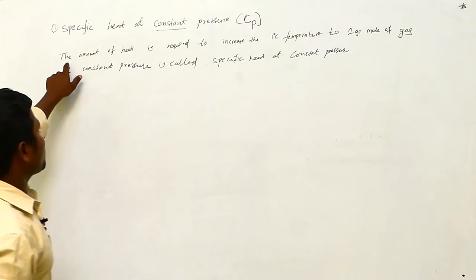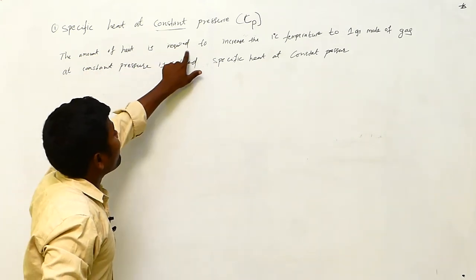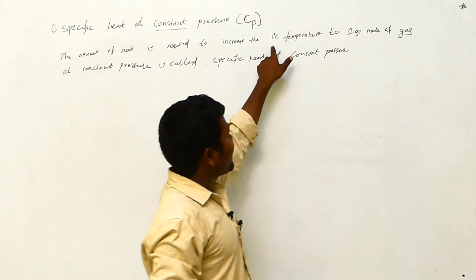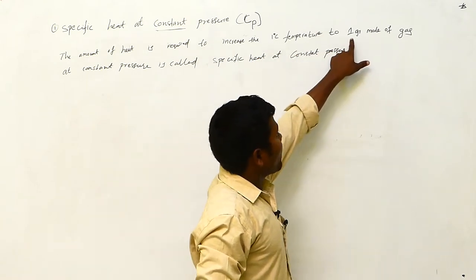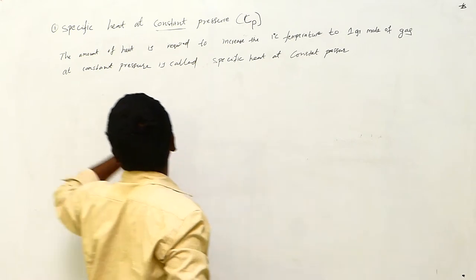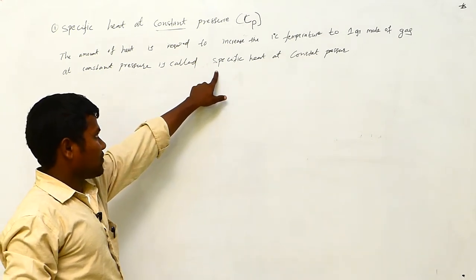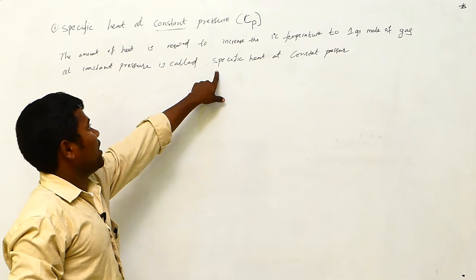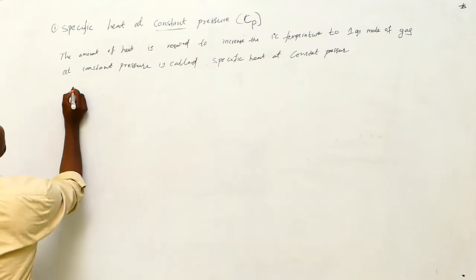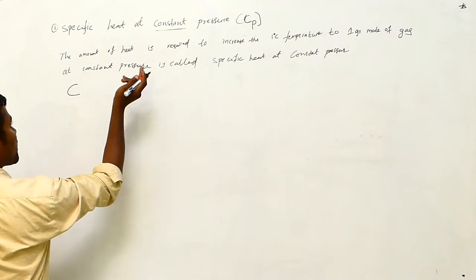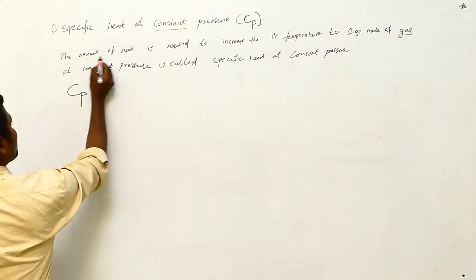The amount of heat required to increase the temperature by one degree centigrade for one gram mole of gas at constant pressure is called specific heat at constant pressure. We denote it by the letter C_P — C because it is specific heat, P because it is at constant pressure.